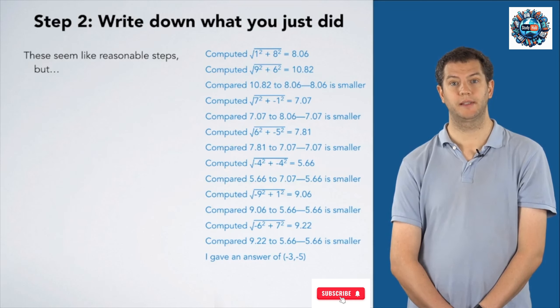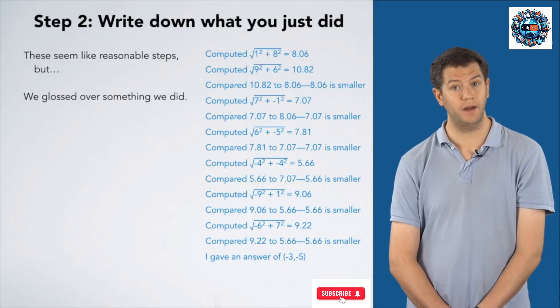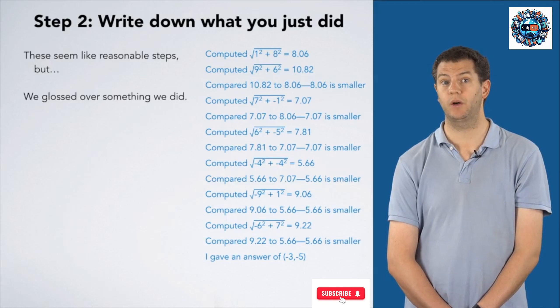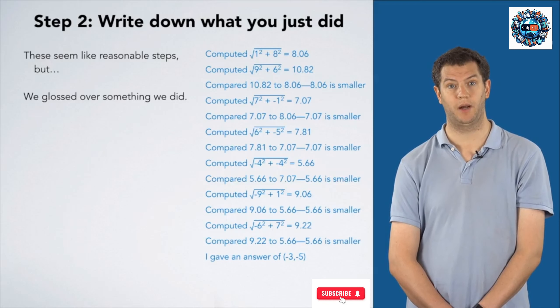These seem like reasonable steps, but we actually glossed over something that we did in the process of writing these steps down. It is very important that we write our steps down carefully, because if we're missing steps, we're going to miss them when we go to generalize, and end up having a problem.